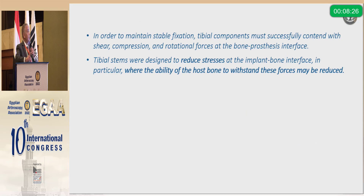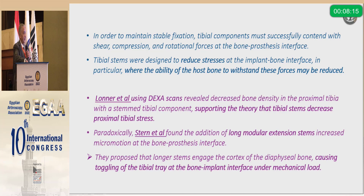In order to maintain stable fixation, the tibial component must successfully withstand shear, compression, and rotational forces. The stem was designed to reduce stresses around the proximal tibia. Using a DEXA scan, Lunar found that the use of a short stem led to decreased bone density in the proximal tibia, indicating that it decreased the stresses around the proximal part.